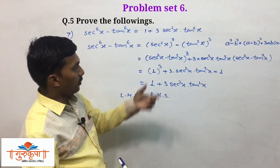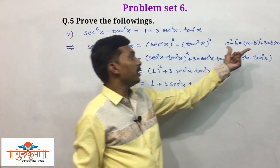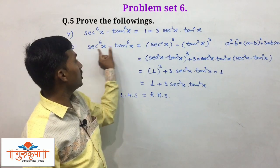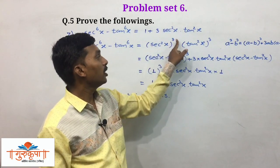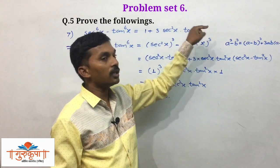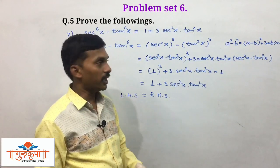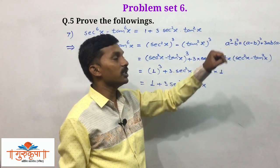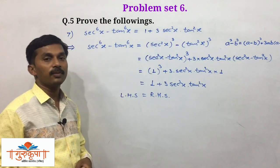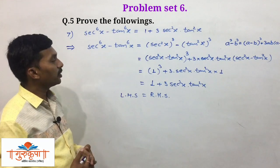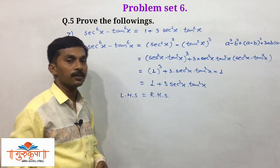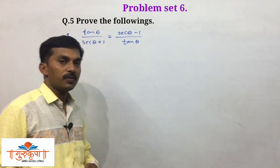So LHS equals RHS. The example is quite straightforward, but the identity is very important: converting sec to the power 6x into (sec squared x) cubed, and tan to the power 6x into (tan squared x) cubed, then using a cubed minus b cubed equals (a minus b) cubed plus 3ab(a minus b). This is all about example number 7. We will take the next example — example number 8 from question number 5.